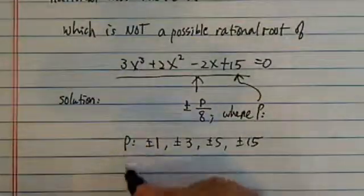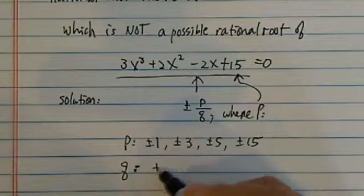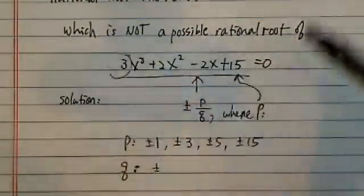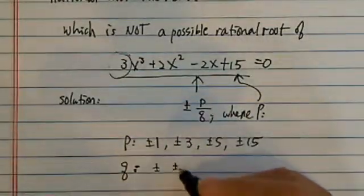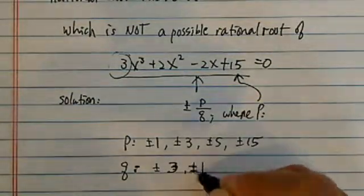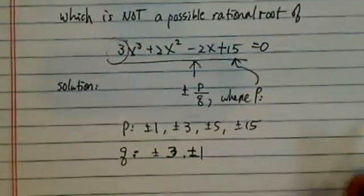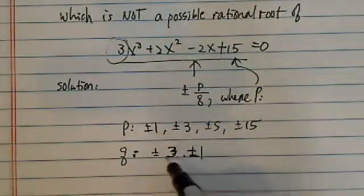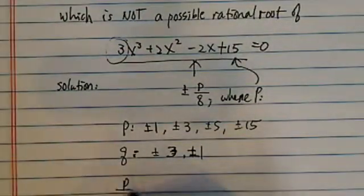And then q is the leading coefficient. So it's plus minus 3, and then plus minus 1. So all the possible answers, you have to check p over q.